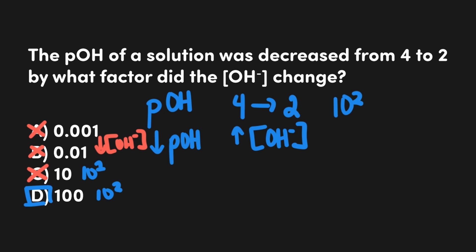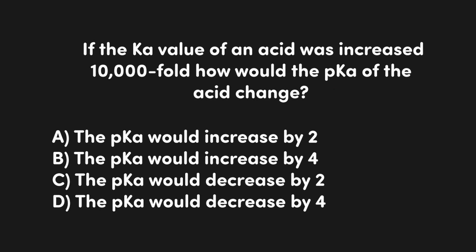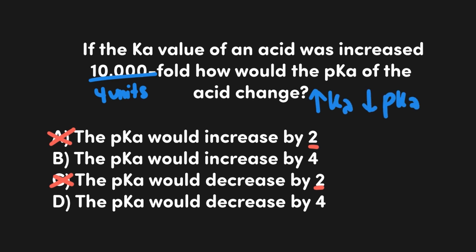Now let's look at a slight variation. This question asks: if the Ka value of an acid was increased 10,000-fold, how would the pKa of the acid change? In this instance, we're working from the underlying Ka value to the p-scale rather than the other way around. A 10,000-fold difference is 4 factors of 10, which means we need to change by 4 units on the pKa scale. We can eliminate A and C since they reference a 2 pKa unit difference, which would correspond with only a 100-fold difference. Since the Ka value is increasing 10,000-fold, the pKa has to go down — since they're inversely related. Therefore, the correct answer is D: the pKa would decrease by 4.